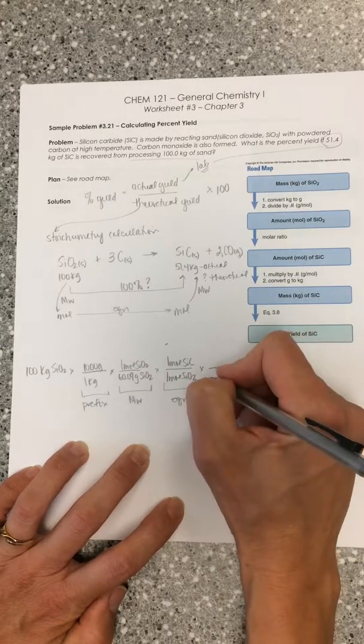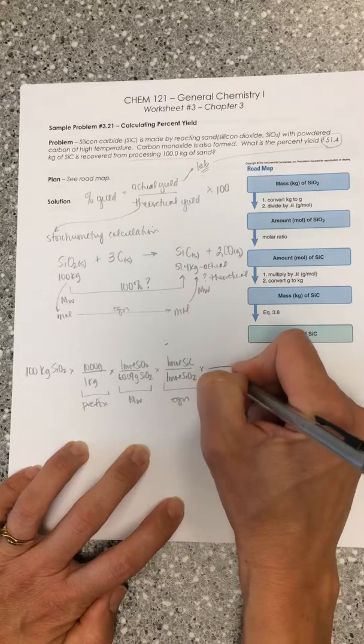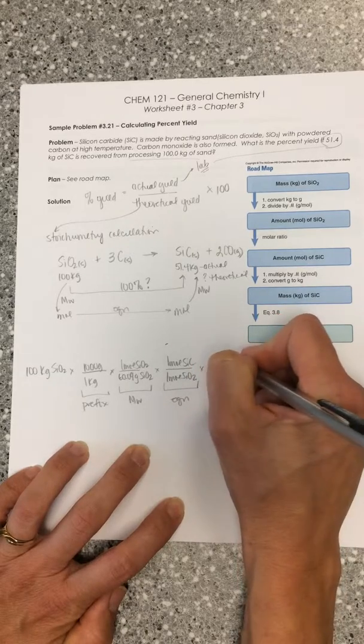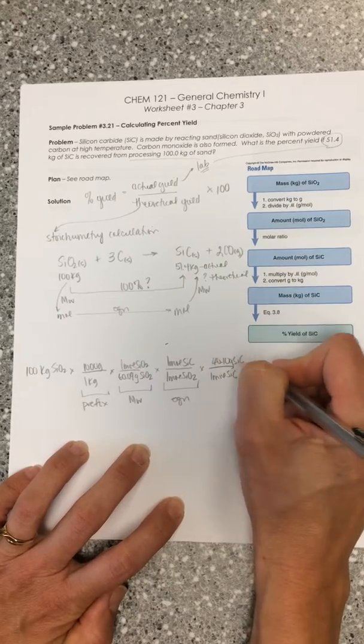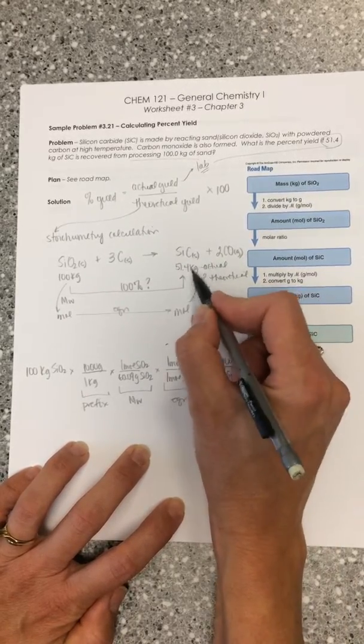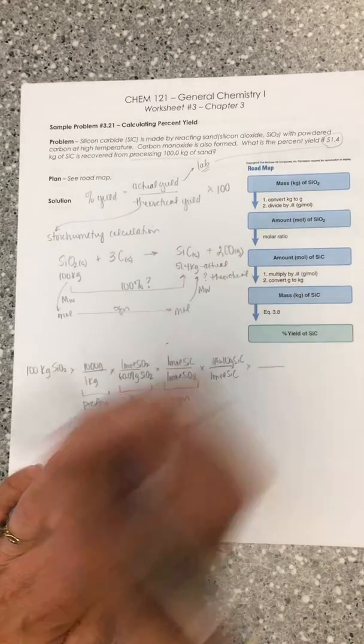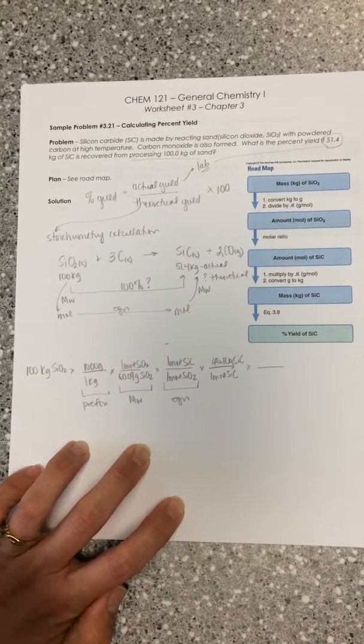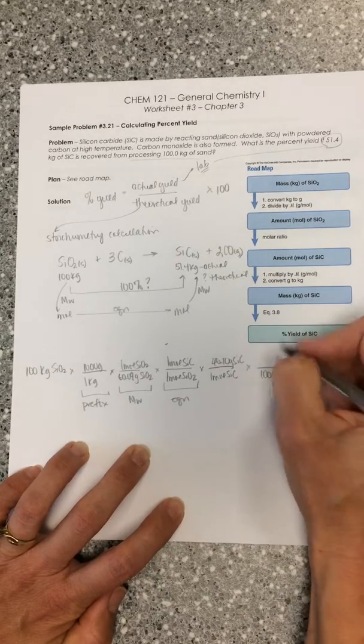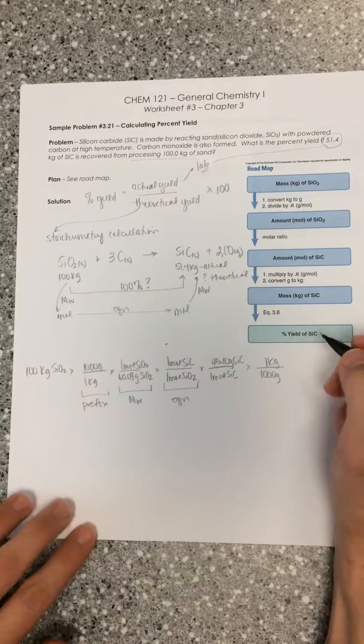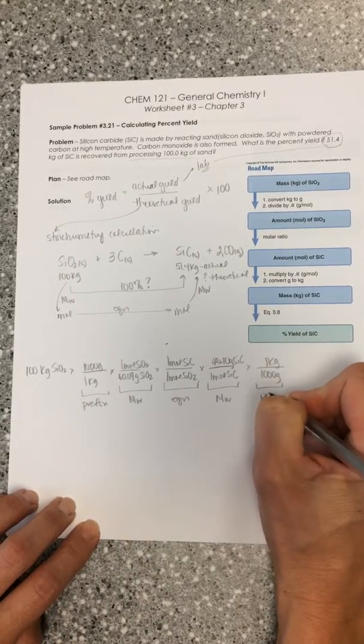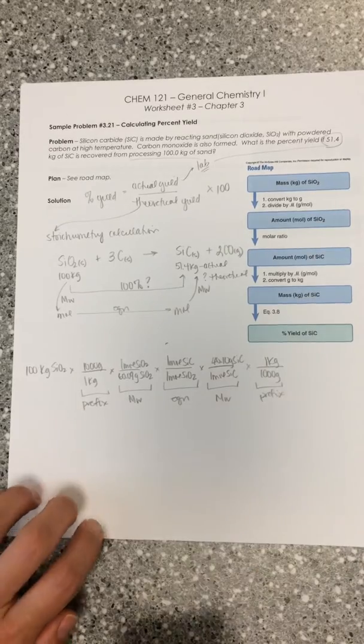Now we're ready to go to a mass. So we're going to have 1 mole of silicon carbide is 40.10 grams of silicon carbide. And since we're talking about theoretical and actual yields, we want to have units of kilograms, the same as our actual yield. So we're going to go back to kilograms, so 1,000 grams is 1 kilogram. This is a molar mass, and this is another prefix conversion.